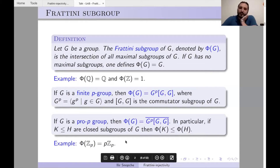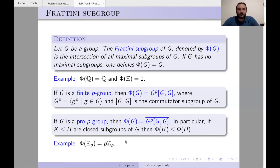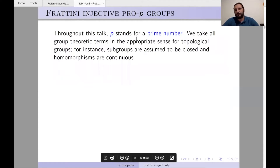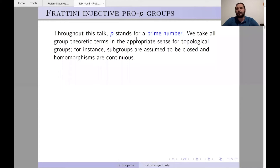Throughout this talk, p will stand for a prime number. Pro-p groups are topological groups which are compact, totally disconnected, and where every open subgroup has index a power of p. We take group-theoretic terms in the appropriate sense for topological groups: subgroups are assumed to be closed, homomorphisms are continuous, and generators are topological generators.